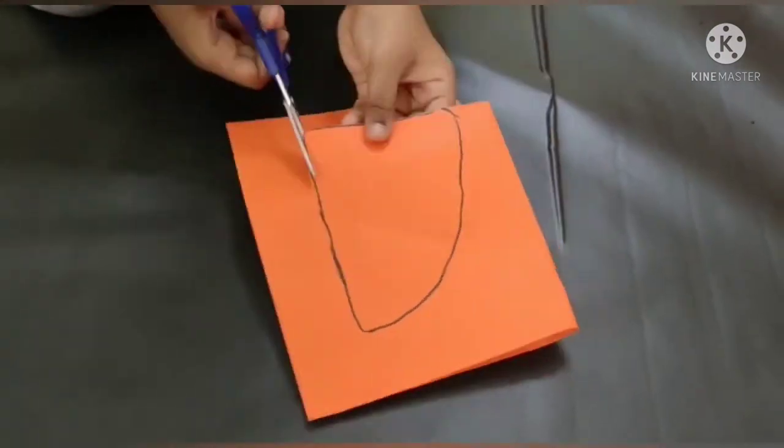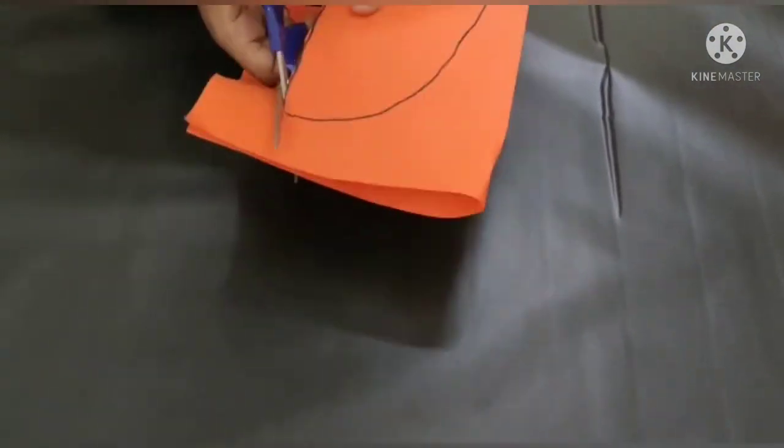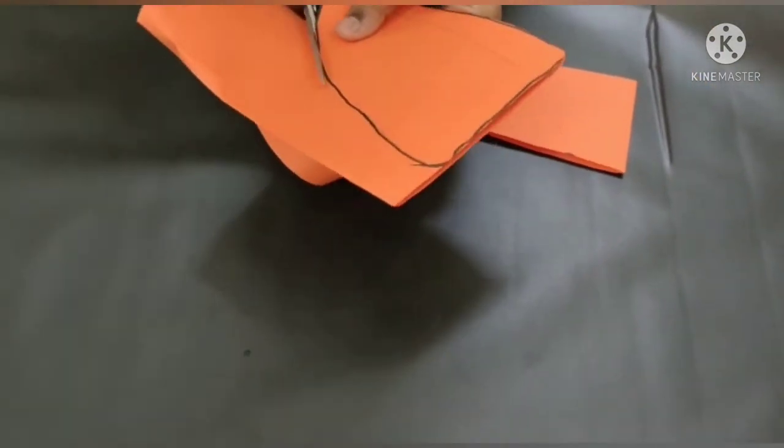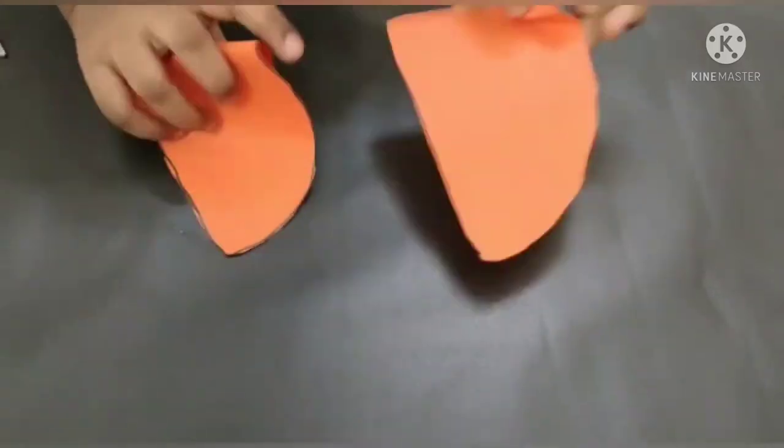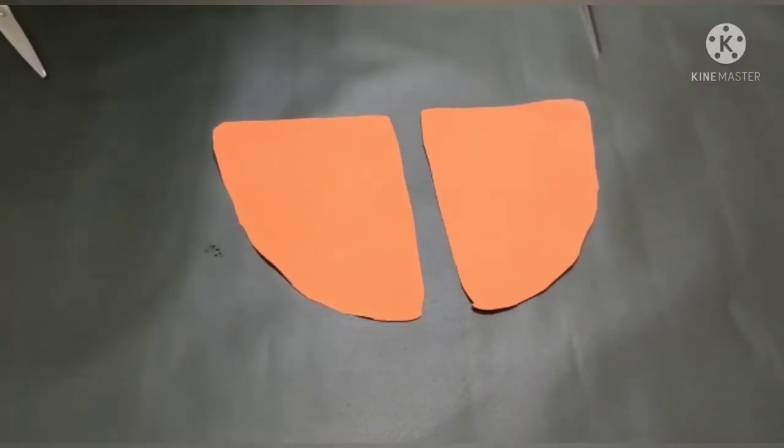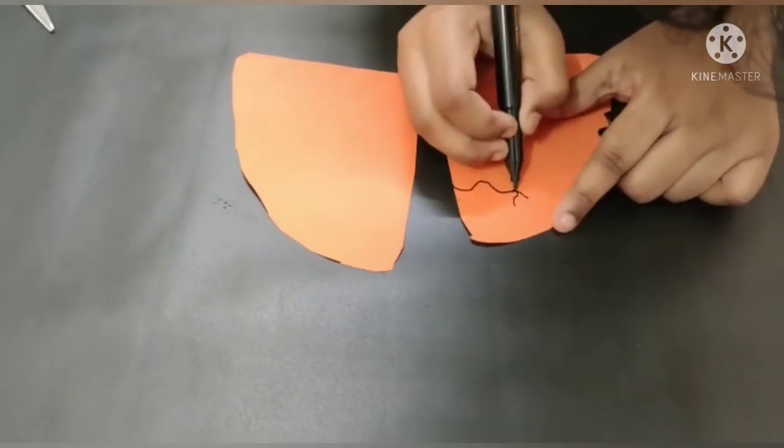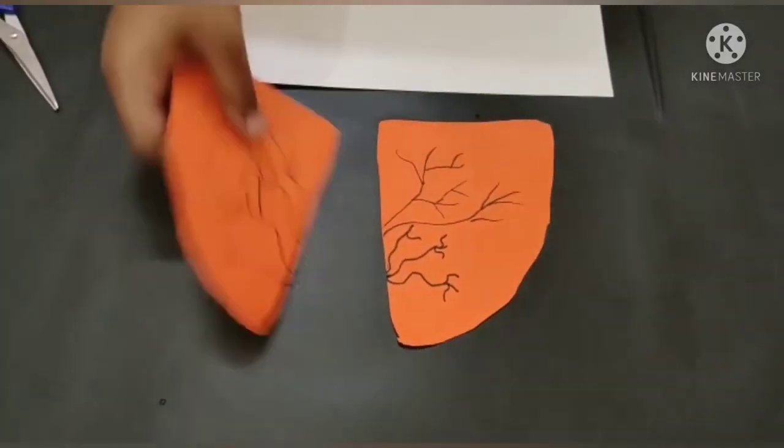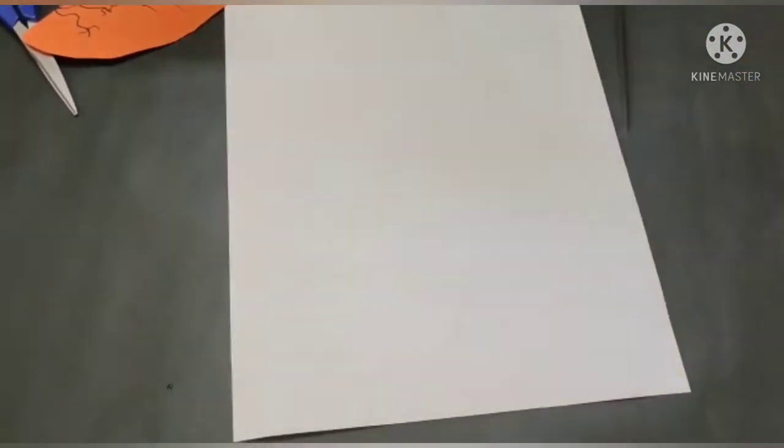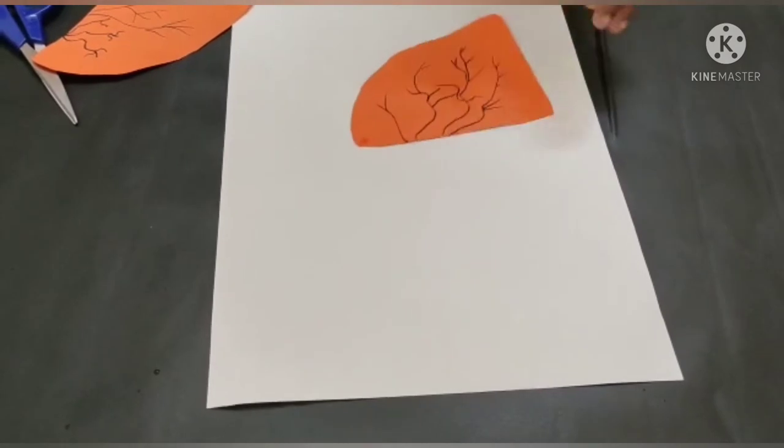Now I am going to cut along the lines. Now we get two lungs. Stick the lungs on a white paper.